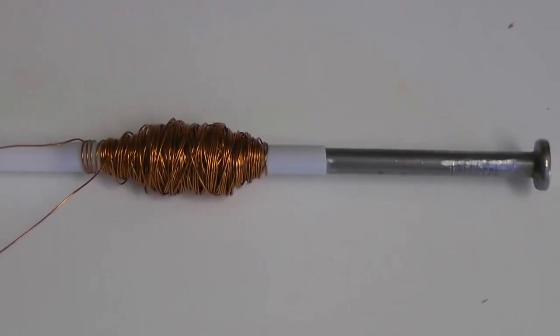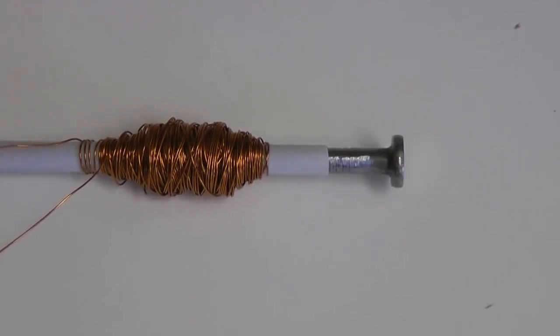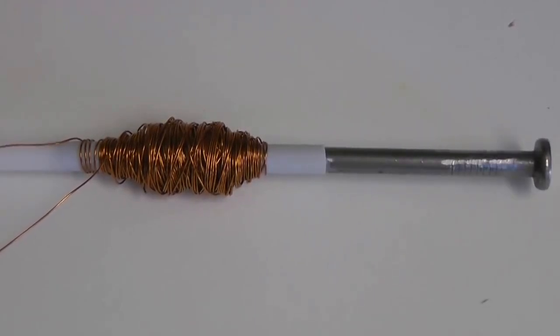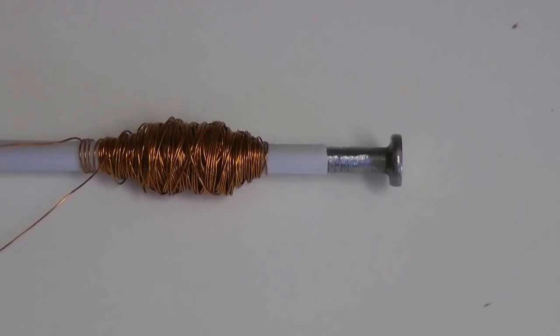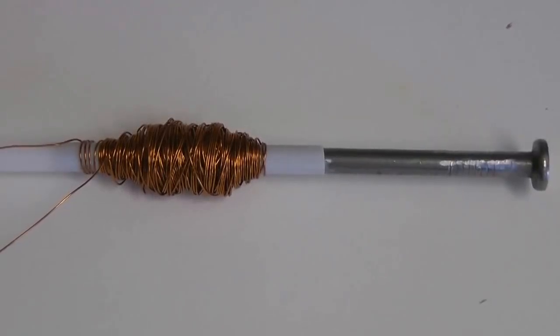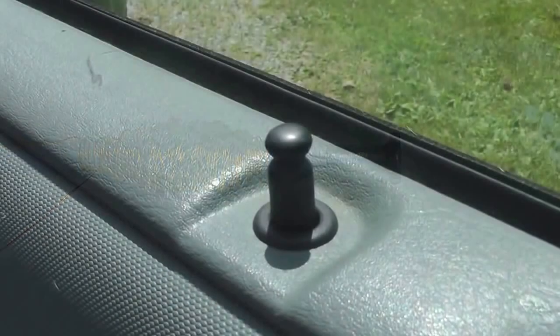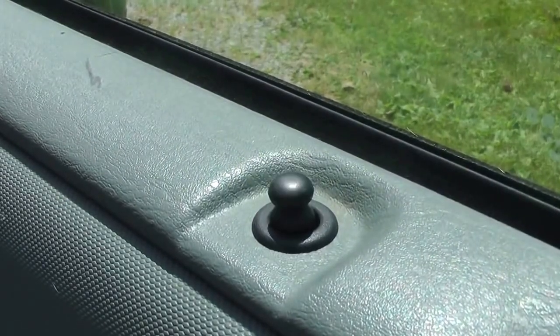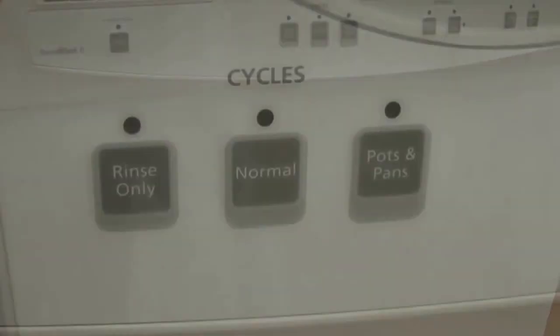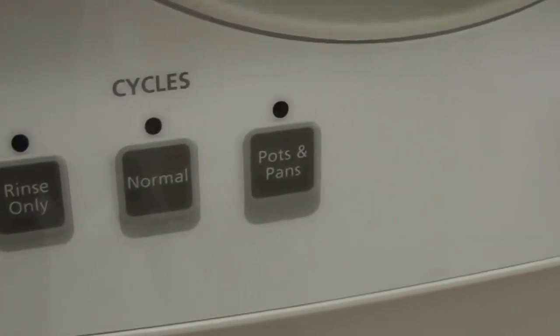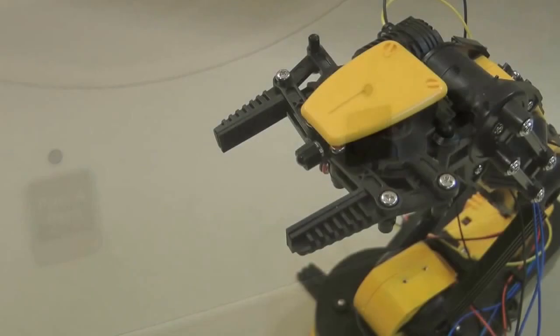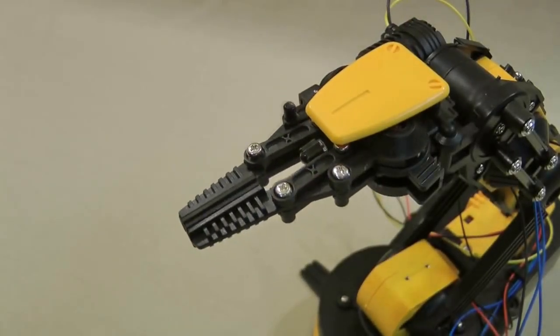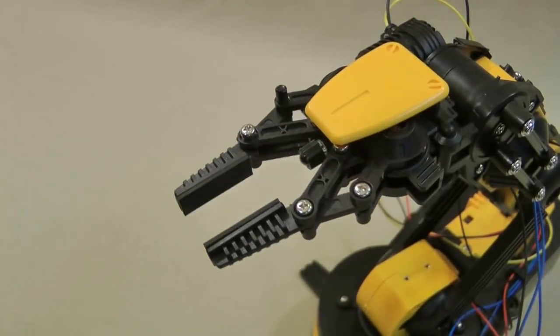Electromechanical solenoids are devices used to activate anything requiring a quick and powerful linear motion. You probably have a number of solenoid-operated devices in your home. Power locks on a car are often activated by solenoids, and the numerous cycles of a dishwasher are controlled and activated by solenoids. Manufacturers use solenoids to control and operate specialized equipment used on modern assembly lines.